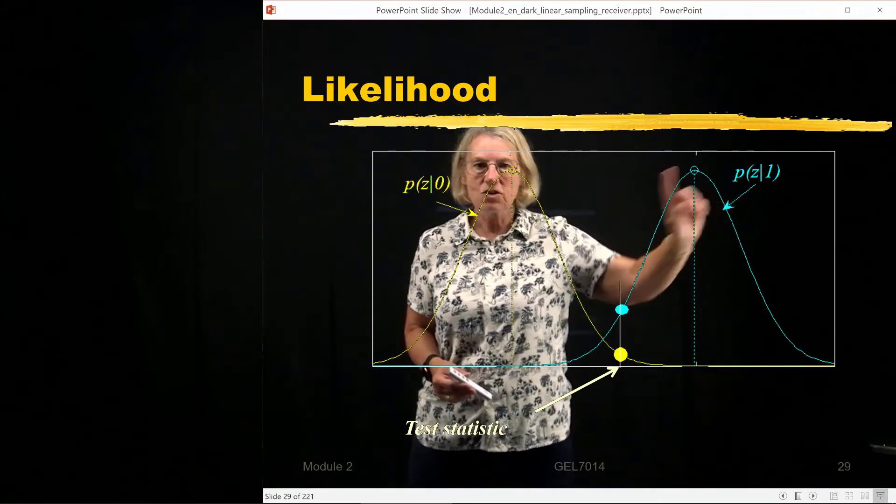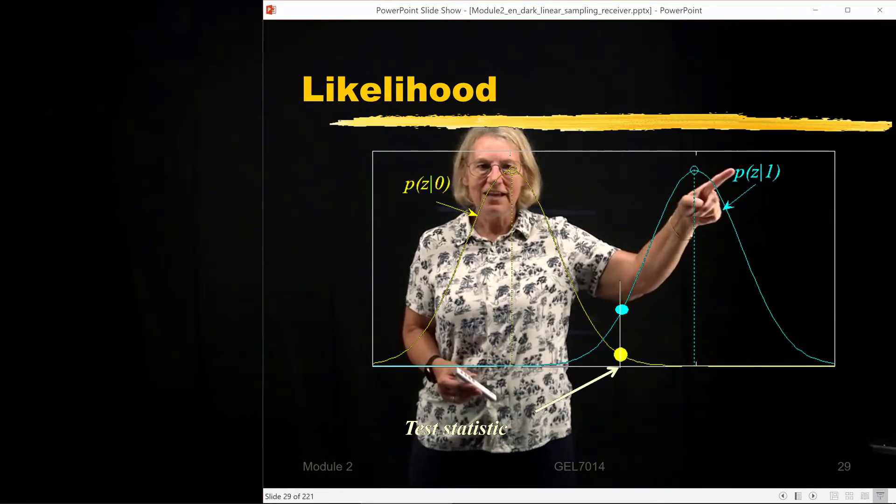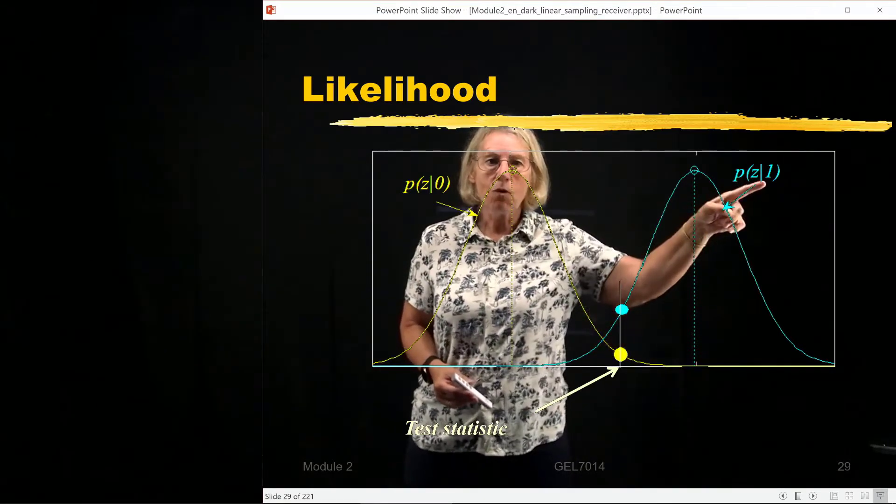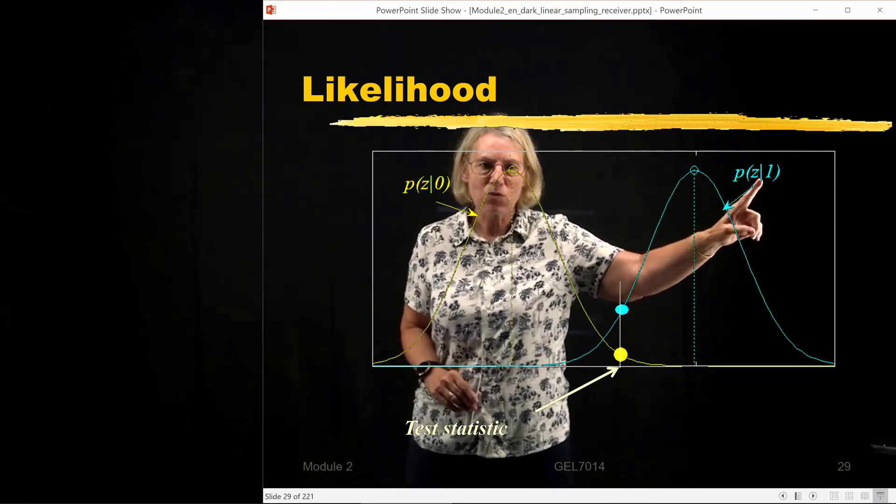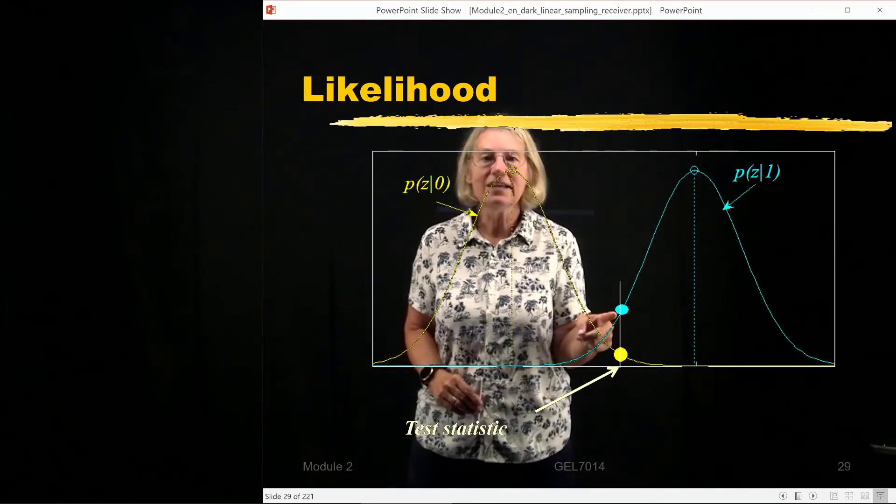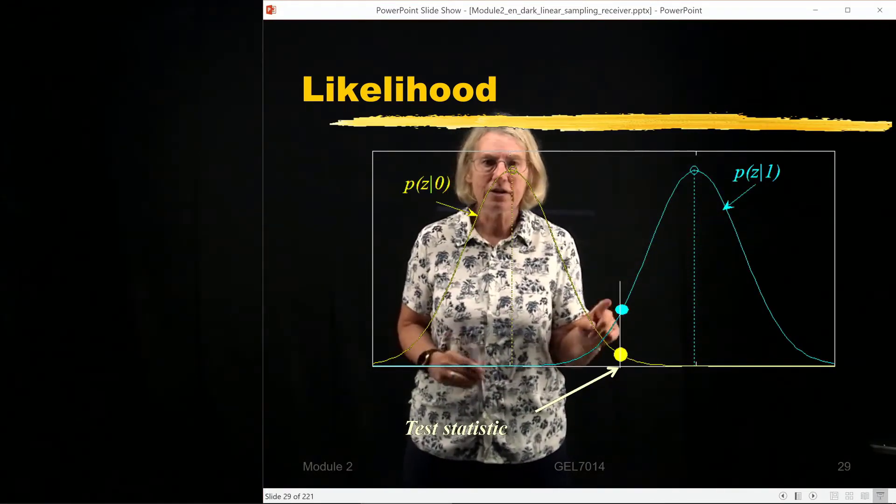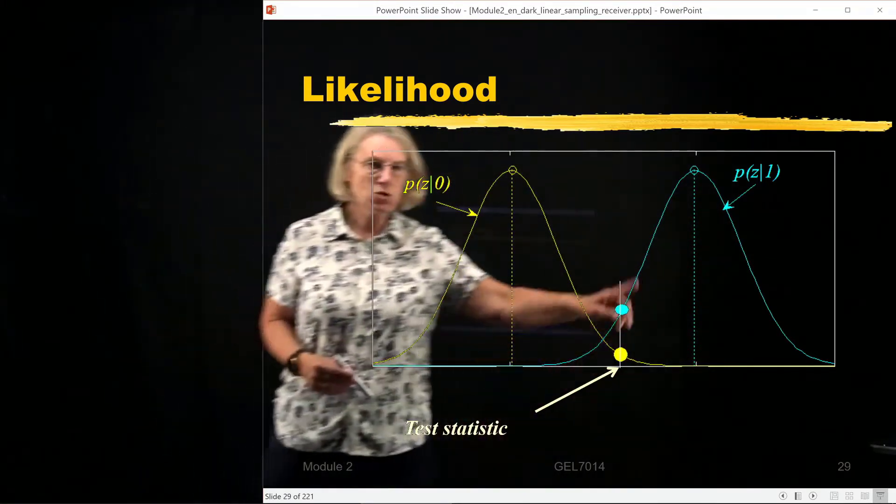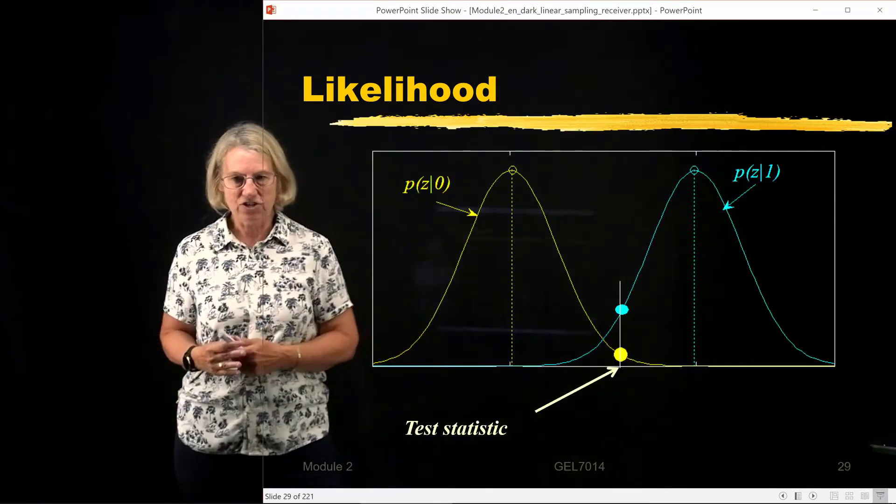So the probability given, when I measure z, the probability is more likely that it was a 1 sent because that probability, that conditional probability is larger than when a 0 was sent. And so because this one is bigger, that's the likelihood strategy.